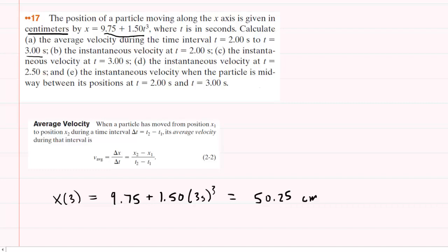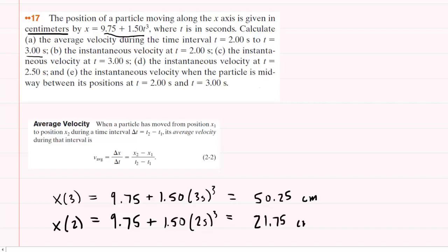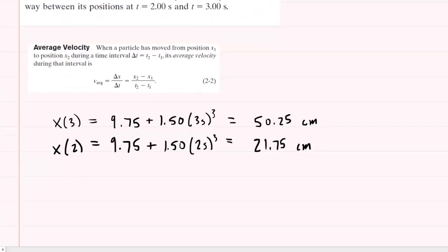Note that the position is measured in this problem in centimeters, so this will come out in centimeters. We're going to calculate the position at a time of 2 seconds, so to do that we'll plug 2 seconds in for t. So 1.50 times 2 seconds cubed — when you punch this in you get 21.75 centimeters. So now we're ready to calculate the average velocity during this time interval.